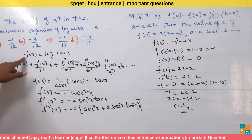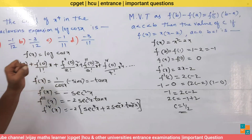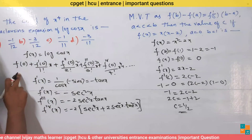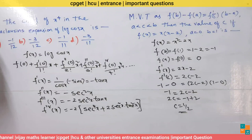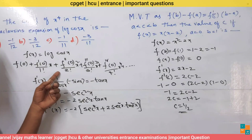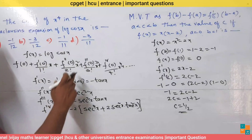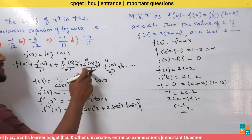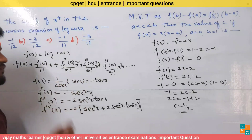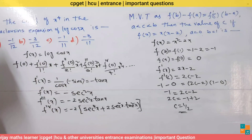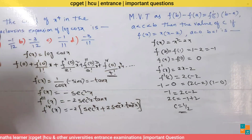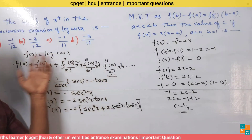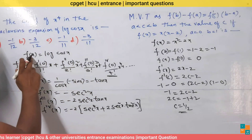The Maclaurin expansion is: f(0) + f'(0)/1!·x + f''(0)/2!·x² + f'''(0)/3!·x³ + f''''(0)/4!·x⁴ + ... The coefficient of x⁴ is f''''(0)/4!, so we need to find the fourth derivative of f(x) evaluated at 0.